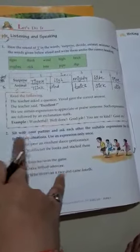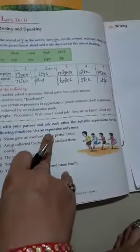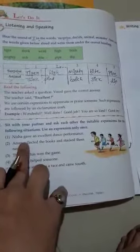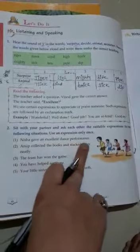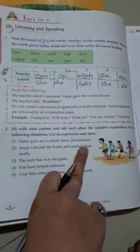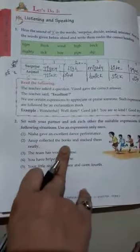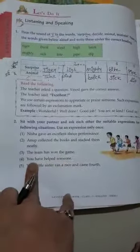Second one: Sit with your partner and ask each other the suitable expression for the following situations. First: Nisha gave an excellent dance performance, so which type of expression would you give to her? Second: Anoop collected the books and stacked them neatly. Third: The team has won the game, so you will say good job.